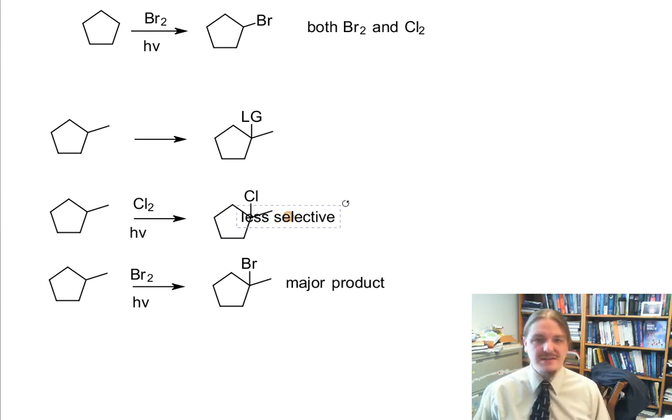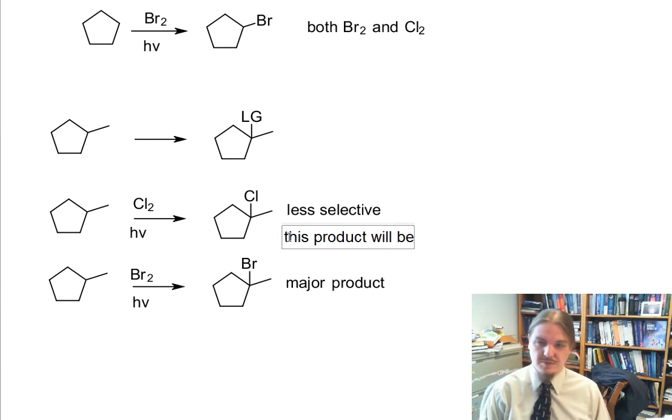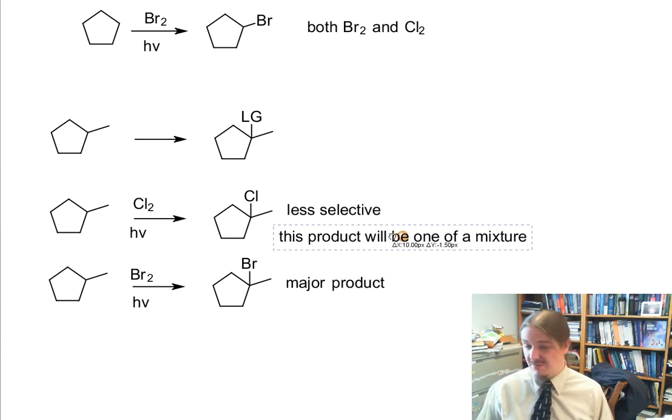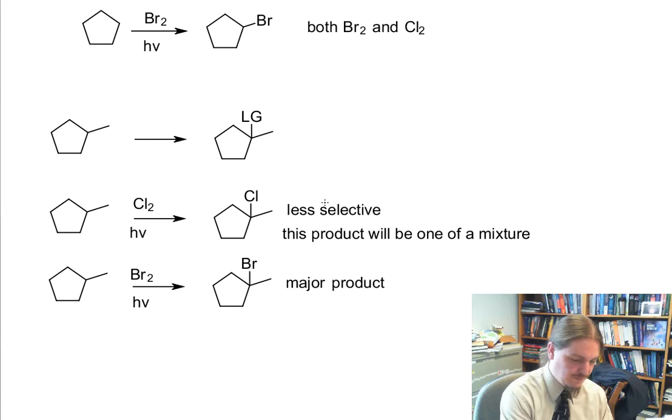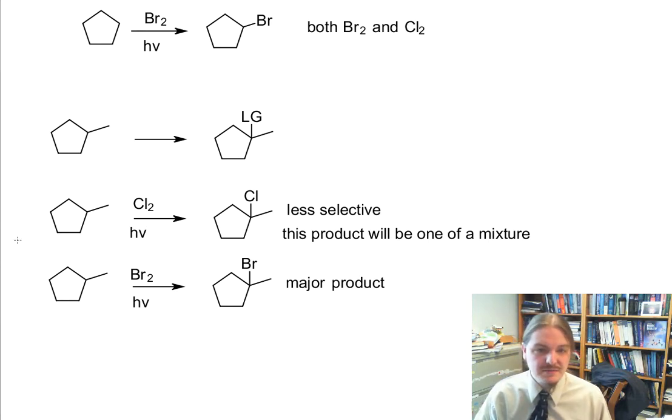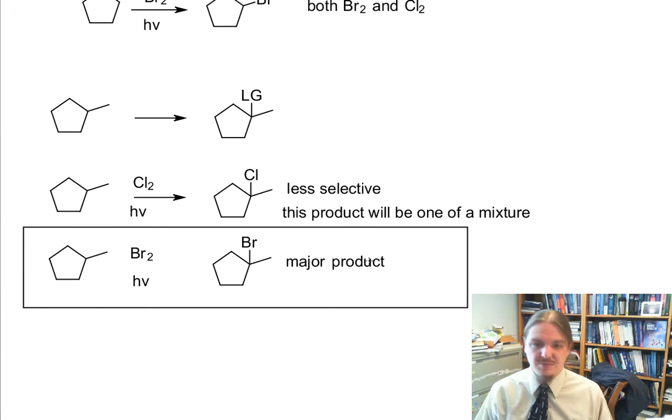We know that chlorine is less selective. So while chlorine is less selective, this product is going to form but it's going to be one of a mixture. It might not even be the largest amount of the mixture. There are all of these secondary positions and primary positions, so you're going to get a mixture and it's not necessarily going to be pretty. In this particular case, we're going to want to use bromine because bromine is selective for the more substituted position.